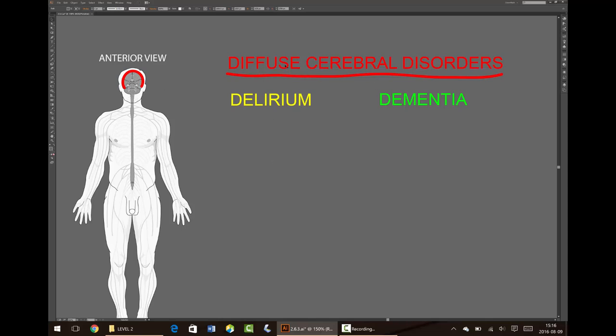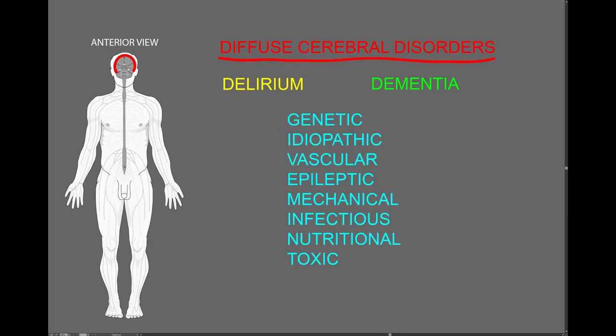Many different types of pathology can cause diffuse cerebral syndromes. These are some of the categories of pathology that can cause diffuse cerebral dysfunction. Most of these primarily affect cognition, but some may also affect emotional functions or consciousness, the other higher neural functions.